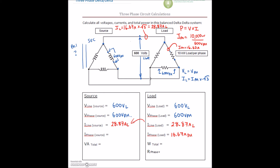We know that the current inside the transformer — on each of the windings — is going to have to provide 16.67 amps. So we'll drop that in: 16.67 amps on the phase. Now all we need to do is find our total wattage and resistance, and then we're done.